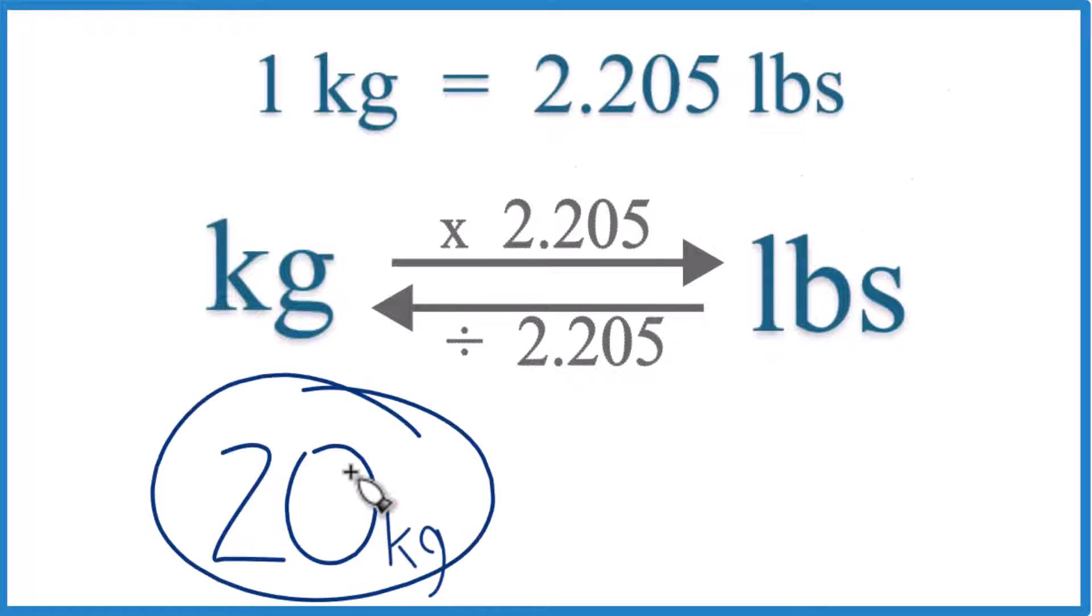Let's convert 20 kilograms to pounds. Here's how you do it. One kilogram equals 2.205 pounds.